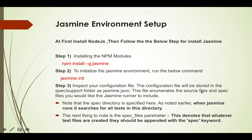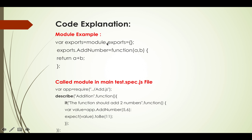Inspect your configuration file. The configuration file will be stored in the spec support folder as jasmine.json. This file manages the source files and spec files you would like the Jasmine runner to include. Note that the spec directory is specified here. When Jasmine runs, it searches for all tests in that directory. Also note the spec_file parameter — this denotes that whatever test files are created, they should be suffixed with the spec keyword.